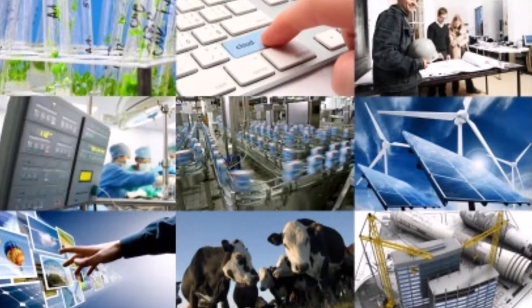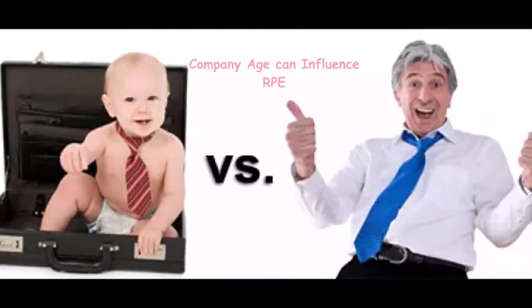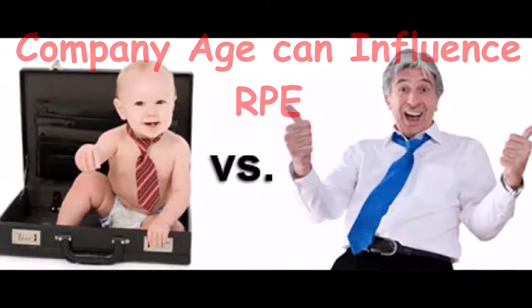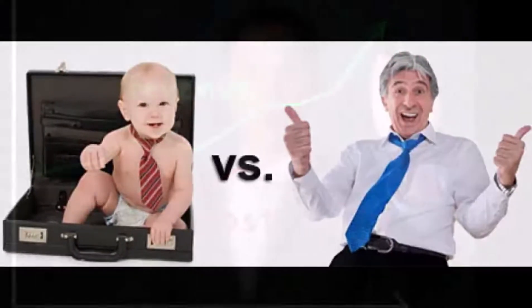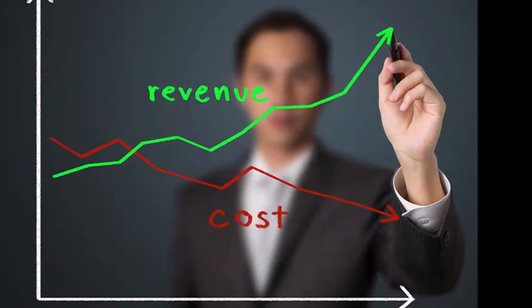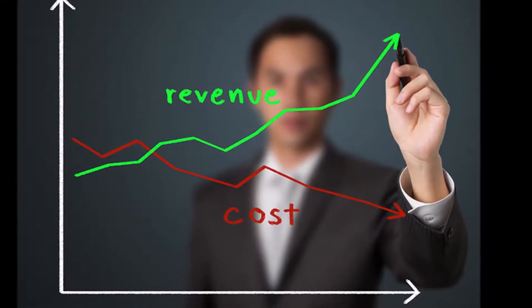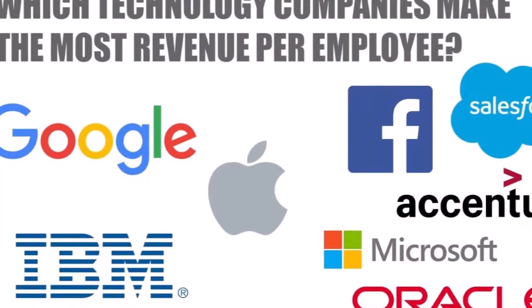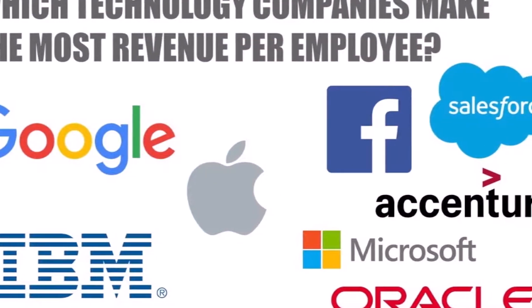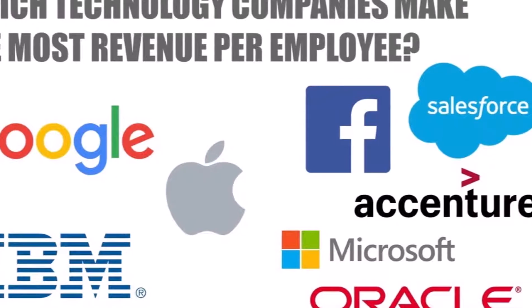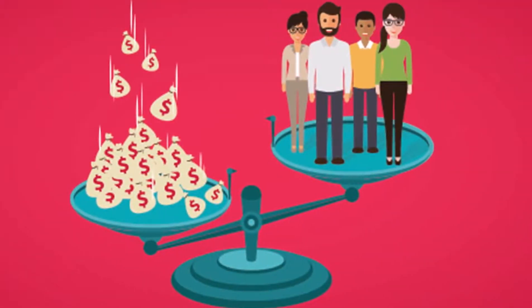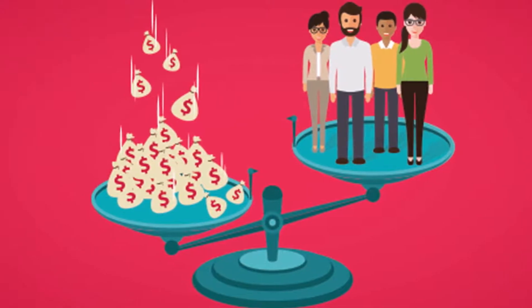A company's age can also influence its revenue per employee ratio. Young companies may be in the process of escalating their hiring activity to fill key positions, yet their revenue may still be relatively small. Such firms tend to have lower revenue per employee ratios than more established companies that can leverage those same key positions over a larger revenue base.